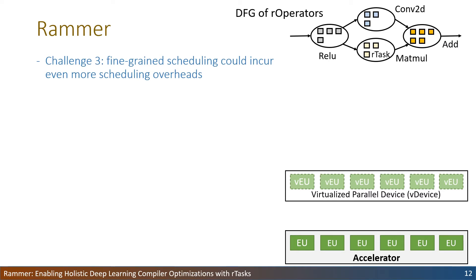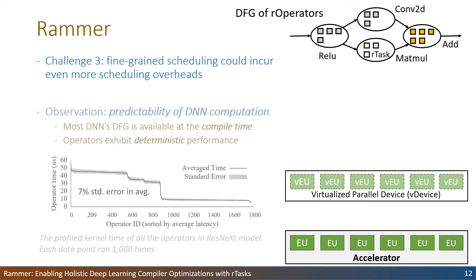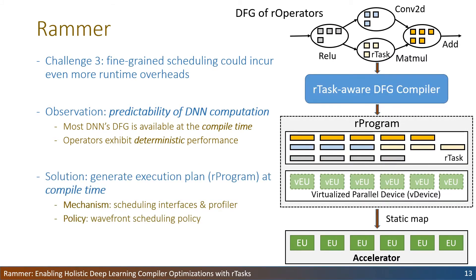Although we expose fine-grained scheduling capability for operators and hardware, fine-grained scheduling could incur even more scheduling overhead. Fortunately, we observed the predictability of DNN computation — most DNN data flow graphs are available at compile time, and operator execution time exhibits deterministic performance. The operator execution time of 1000 runs on the ResNeXt model shows only 7% standard error on average. Therefore, Reimer moves the scheduling decision from runtime to compile time and statically maps the execution plan to the accelerator. This not only avoids unnecessary runtime overhead but also allows the scheduling policy to fully exploit inter- and intra-operator parallelism together.